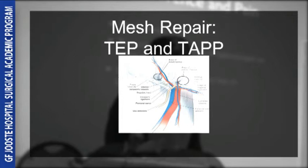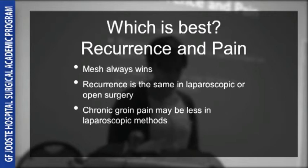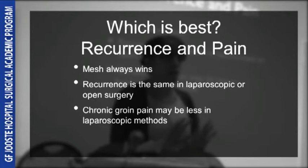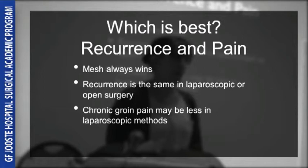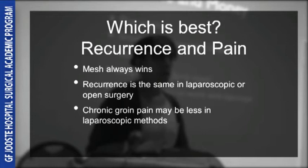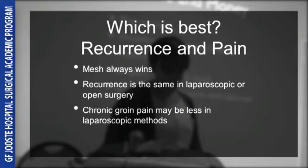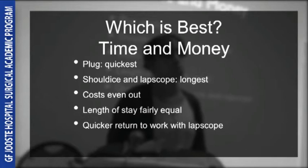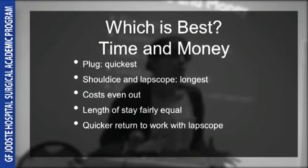Which repair is best? We can look at recurrence and pain. Mesh always wins when it comes to recurrence and has less recurrence than tissue repairs, unless the repair is done at the Shouldice clinic, in which case they compare fairly evenly. Recurrence is low in both open and laparoscopic techniques, although there is some evidence that the incidence of chronic pain is lower in laparoscopic repairs. Laparoscopic surgery is more expensive at the time of surgery, but in theory costs even out as patients who have undergone a laparoscopic repair can return to work slightly earlier.